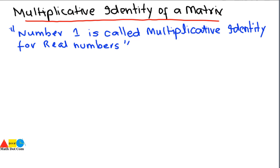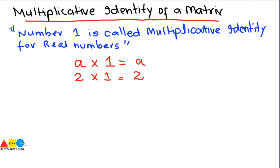In case of real numbers, the number one is called the multiplicative identity for real numbers. Why? Because if we multiply the number one with any real number, the number will remain the same. For example, we have a real number say a — when we multiply it with one, we get the number as it is. If we replace a with two, and multiply it with one, we get two as it is. It means the one is not affecting the real number. So one is the multiplicative identity of real numbers.